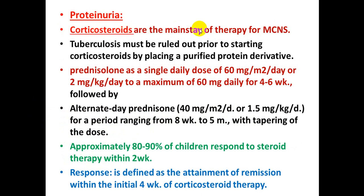Corticosteroids are the mainstay of therapy for minimal change nephrotic syndrome. Tuberculosis should be ruled out before starting corticosteroids. Prednisolone is usually given as a single daily dose of 60 mg per square meter per day or 2 mg per kg per day to a maximum of 60 mg daily for 4 to 6 weeks, followed by alternate-day prednisolone at 40 mg per square meter per day or 1.5 mg per kg per day for 8 weeks to 5 months with tapering. Approximately 80 to 90% of children respond to steroid therapy within 2 weeks.